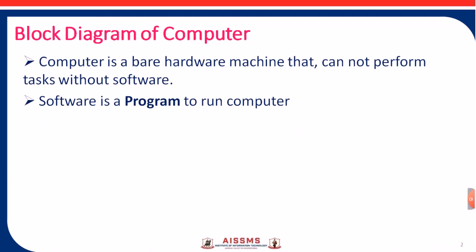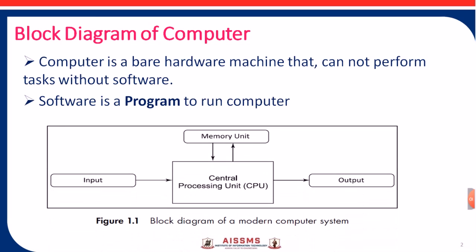In turn, software is a very big program that runs our hardware of computer. This is the block diagram of modern computer system. In that we can see different parts of computer system: input devices, output devices, central processing unit, and memory unit.